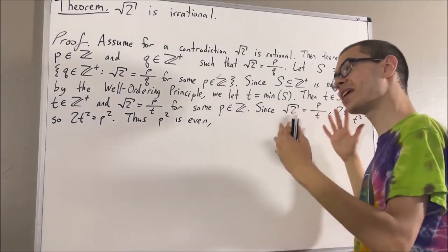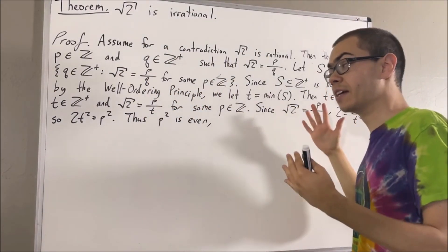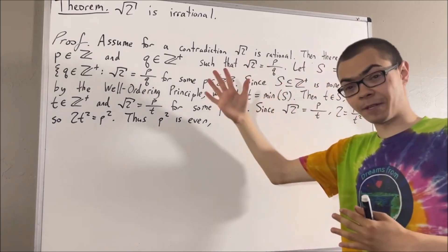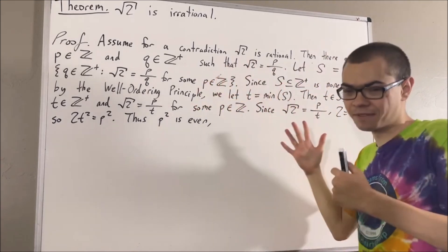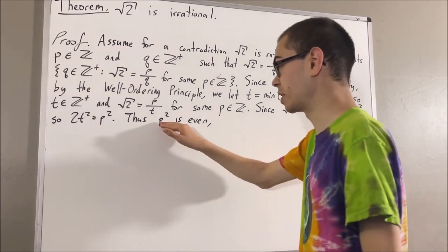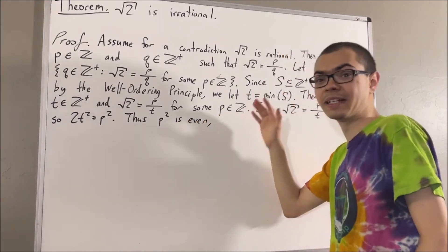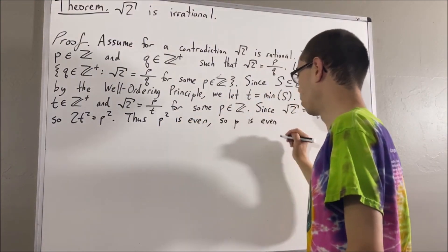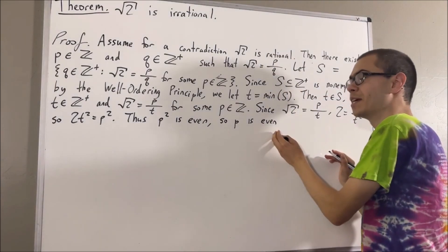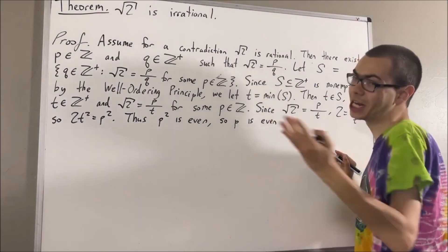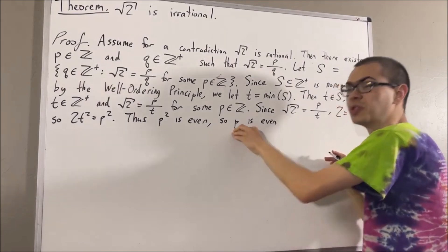Next, it turns out that given any integer a, if a squared is even, then a is even. So since p squared is even, we have that p is even. What does it mean for p to be even? It means that there is some integer j such that p is equal to two j.